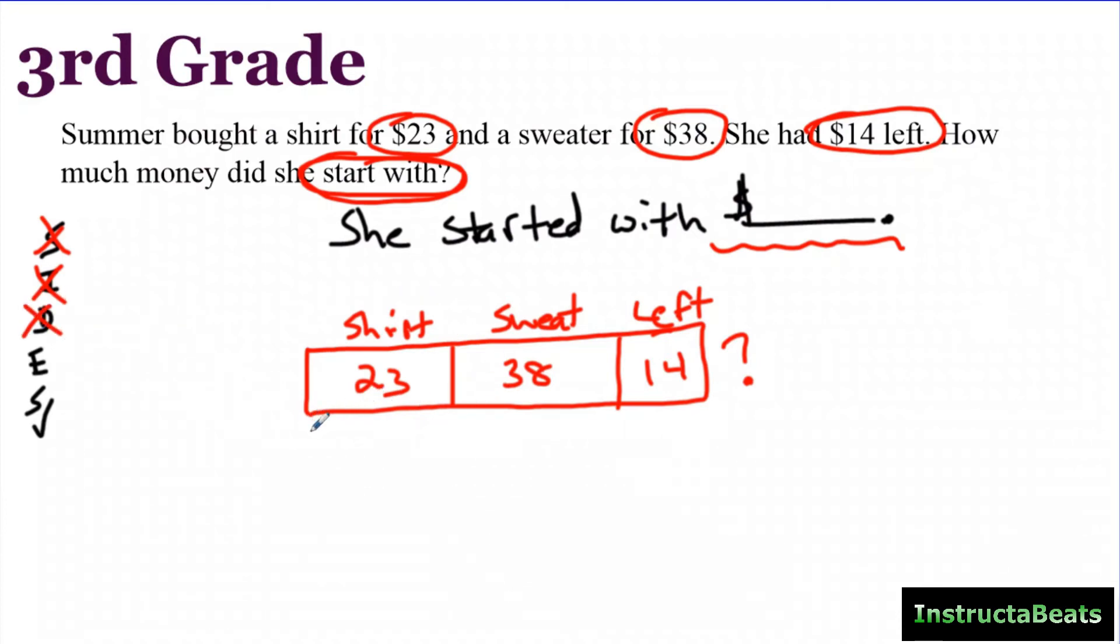So now I've developed my plan. I need to execute it. I need to write my equation. So I'm going to be doing 23 plus 38 plus 14. And that's going to tell me what she started with. You can use an X for a variable, whatever you want to do. You could use a blank underline. That's fine. So I just need to solve this now. And when I combine all those, I get $75. So I'm going to say she started with $75. Now I just want to check it. I want to make sure it makes sense. If I start with $75, could I buy a shirt for 23? Yes. Could I buy a sweater for 38? Yes. And 14 would make sense. I might have it left. So now I've checked it and I know that's my solution. So that's a third grade problem. Let's take it to the next level. Let's do a fourth grade problem.